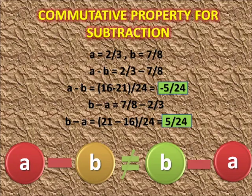Let us do the same thing for subtraction. Here also we consider a equals to 2 by 3 and b equals to 7 by 8. Calculating a minus b: 2 by 3 minus 7 by 8 equals 16 minus 21 by 24, which is minus 5 by 24. Now calculating b minus a: 7 by 8 minus 2 by 3 equals 21 minus 16 by 24, which is 5 by 24. So a minus b equals minus 5 by 24, whereas b minus a equals plus 5 by 24.